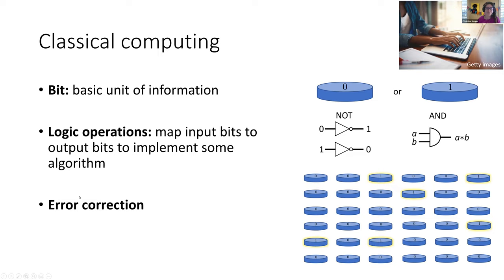Nothing in life is perfect — classical computers suffer from errors. If you imagine coins on a table and there's an earthquake, some will flip their value, changing the stored information. A simple error correction scheme is to store information redundantly across a large collection of coins all supposed to have the same value. Periodically check whether they're all the same, and if not, flip the minimal number to return them to the code space.